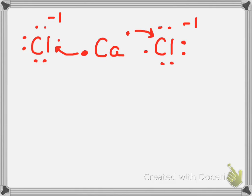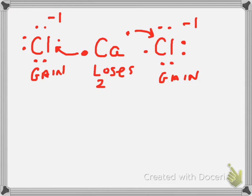Everything's happy here — minus one for both of the chlorines, which they're allowed to do and want to do. Remember, these guys gain an electron. Both chlorines each gain one, and in the case of calcium it loses two electrons, as metals always do.